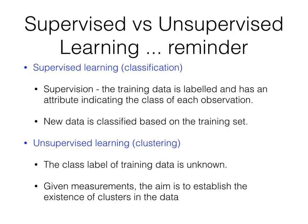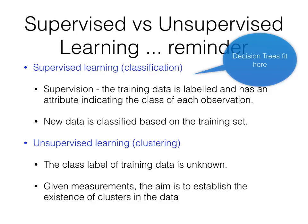As a reminder from a few weeks ago, we have unsupervised and supervised learning. Supervised learning is classification — the training data is labeled and has some attribute indicating the class of the observation, and new data is classified based on the understanding gained from the training set. With unsupervised learning, there's no class label and the aim is to work out how the data is broken up — how it clusters. Decision trees are an example of supervised learning.